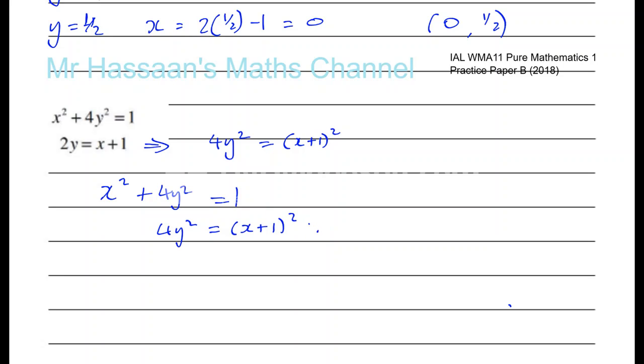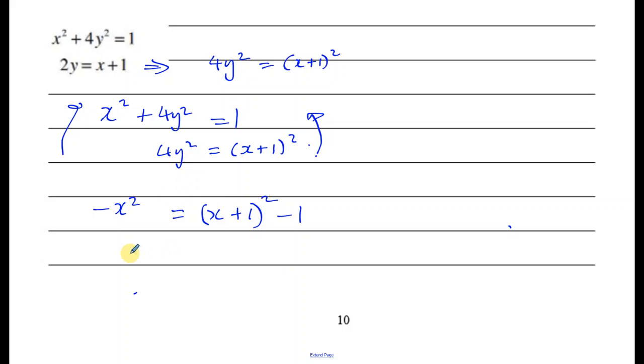Now let me subtract, I suppose this way is probably easier to subtract. So if I subtract these both sides, on this side I'll have minus x squared and plus 0, I'm subtracting this way. So that's going to be 0 minus x squared, and 4y squared minus 4y squared, which disappears, is equal to x plus 1 squared minus 1. So we can see here that we've eliminated the y's. So let's now expand the bracket here. We're going to have x squared plus 2x plus 1 minus 1.